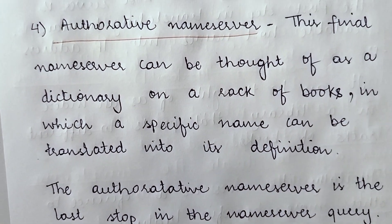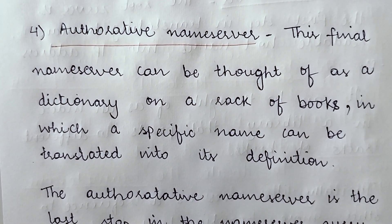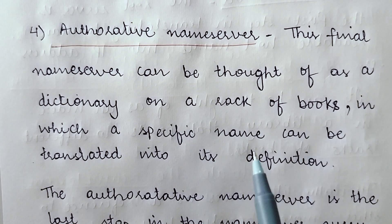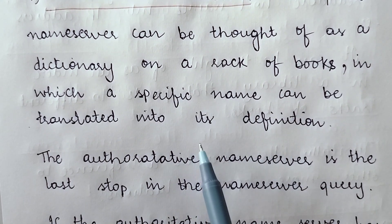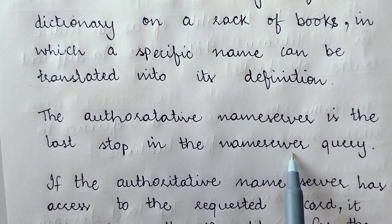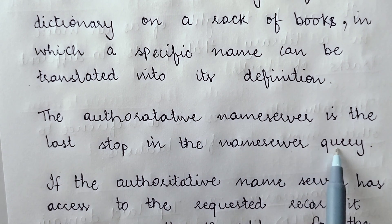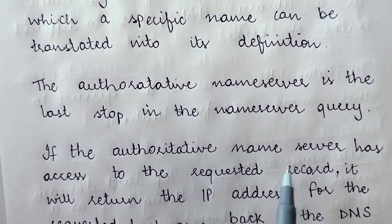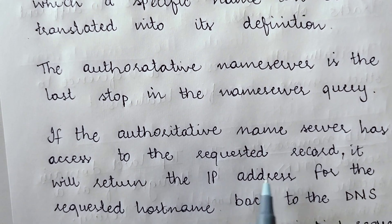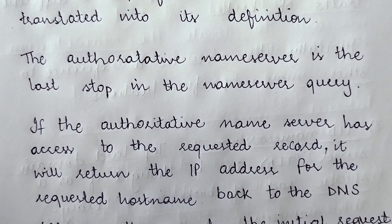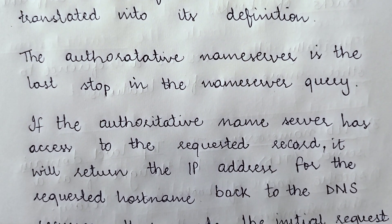The fourth and final DNS server is the authoritative name server. This final name server can be thought of as a dictionary on a rack of books, in which a specific name can be translated into its definition. The authoritative name server is the last stop in the name server query. If it has access to the requested record, it will return the IP address for the requested host name back to the DNS recursor that made the initial request. So this is all about DNS.